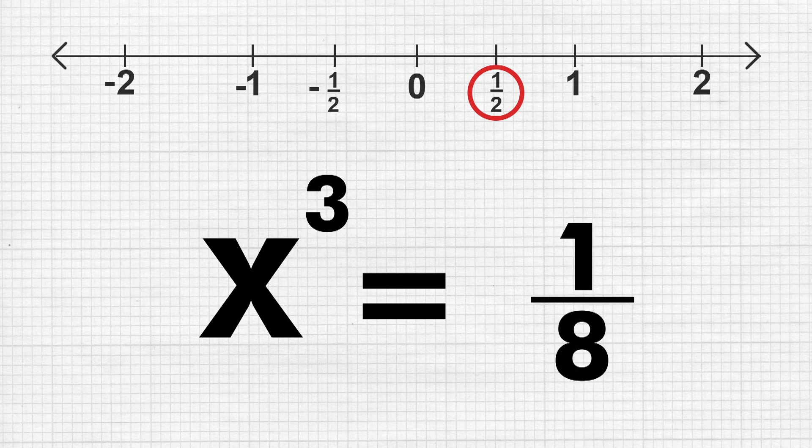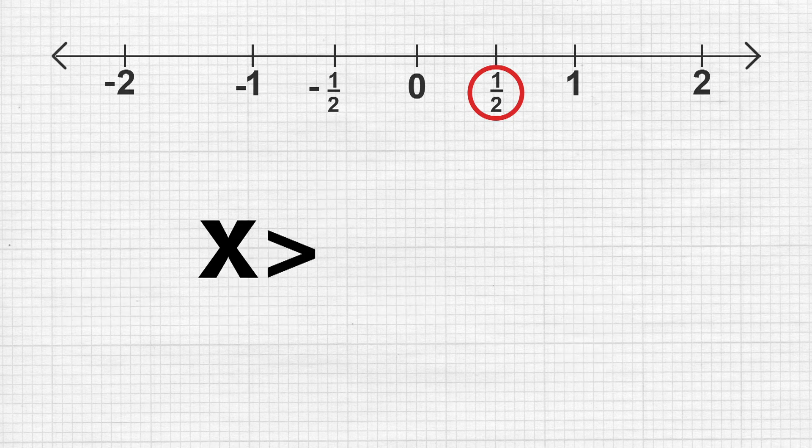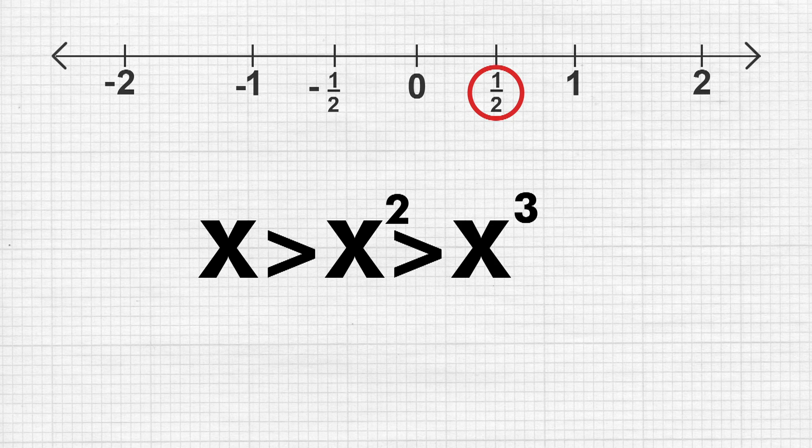So what do we see here? x is greater than x² because 1/2 is greater than 1/4. x² is greater than x³. 1/4 is greater than 1/8.